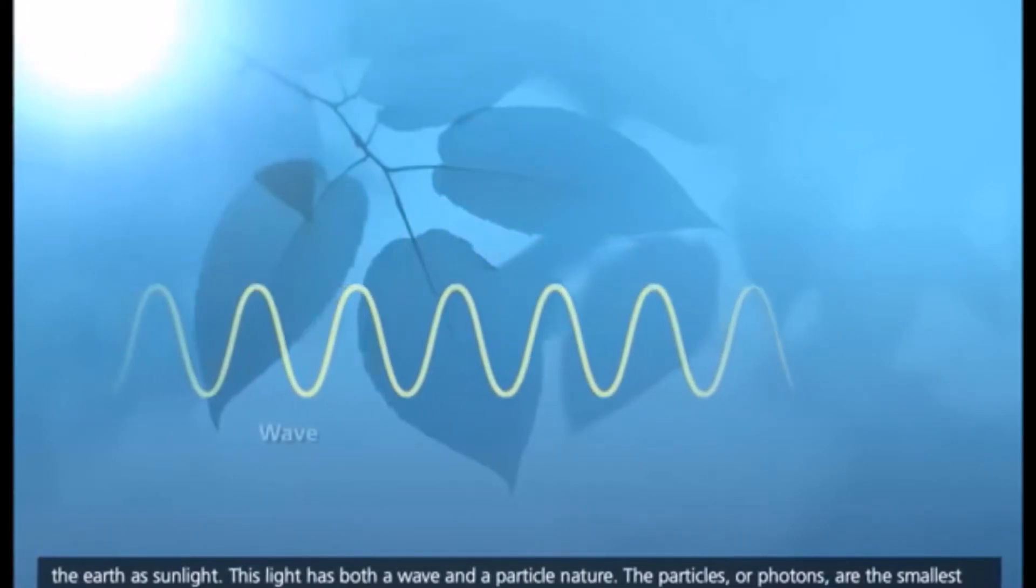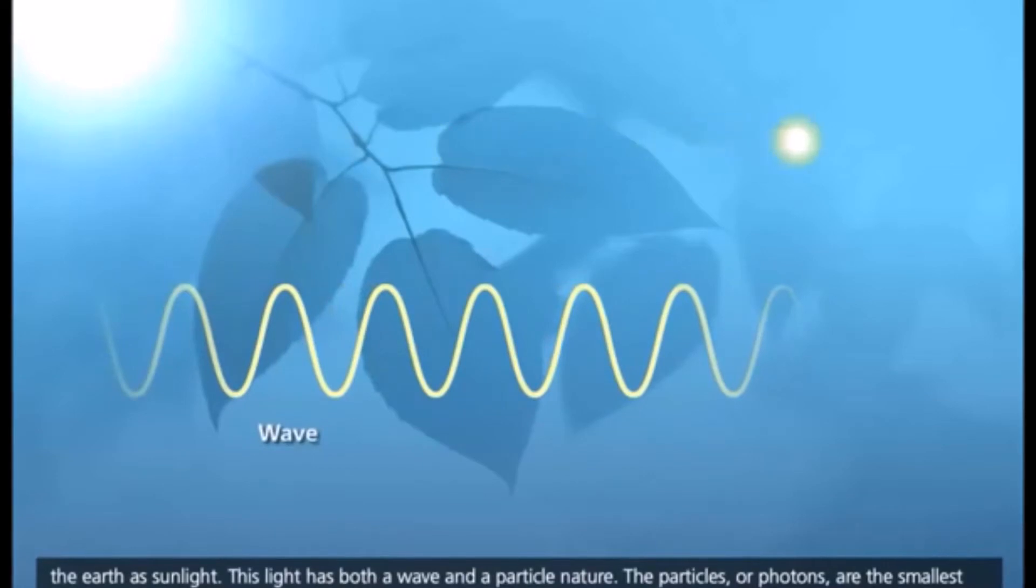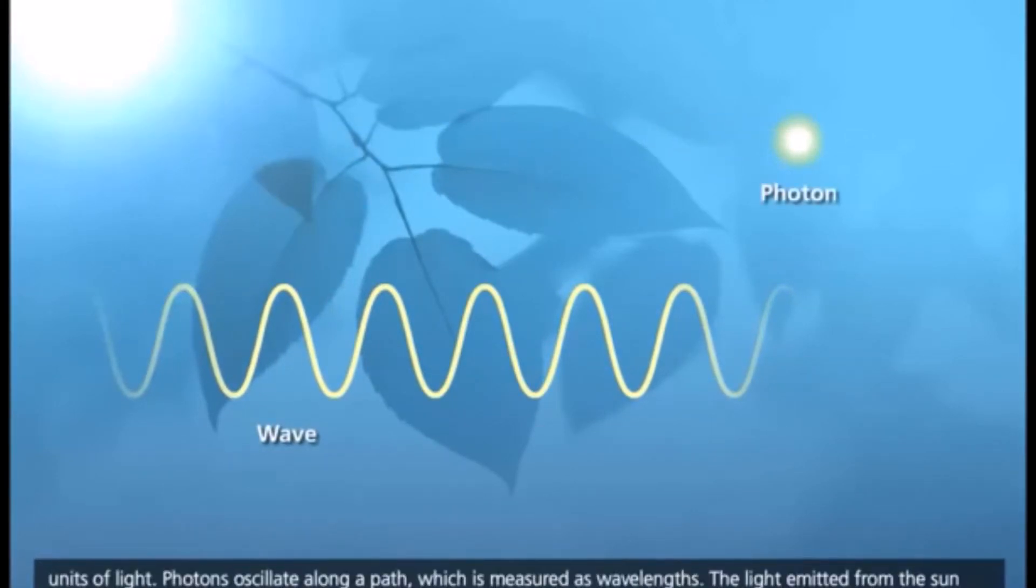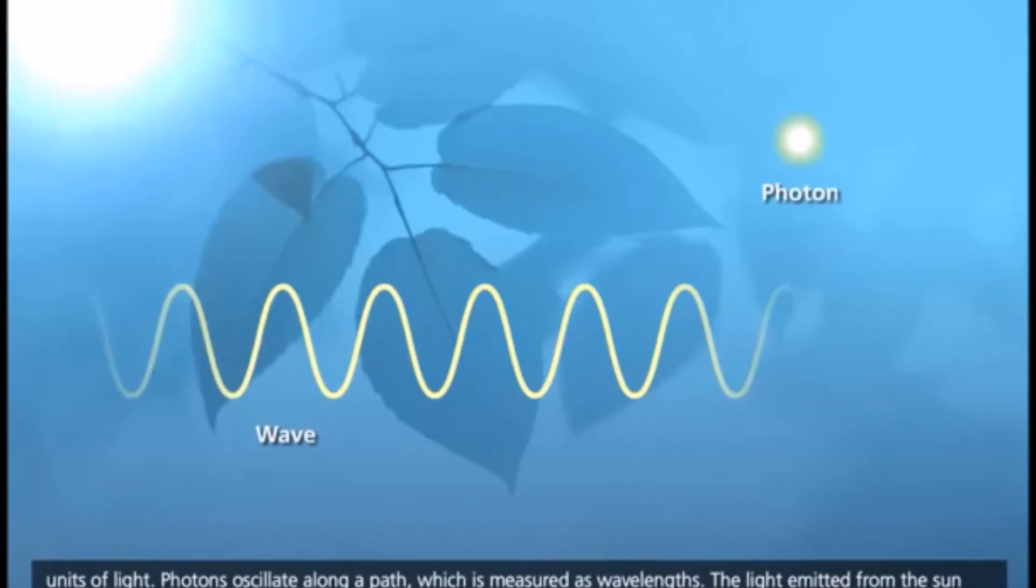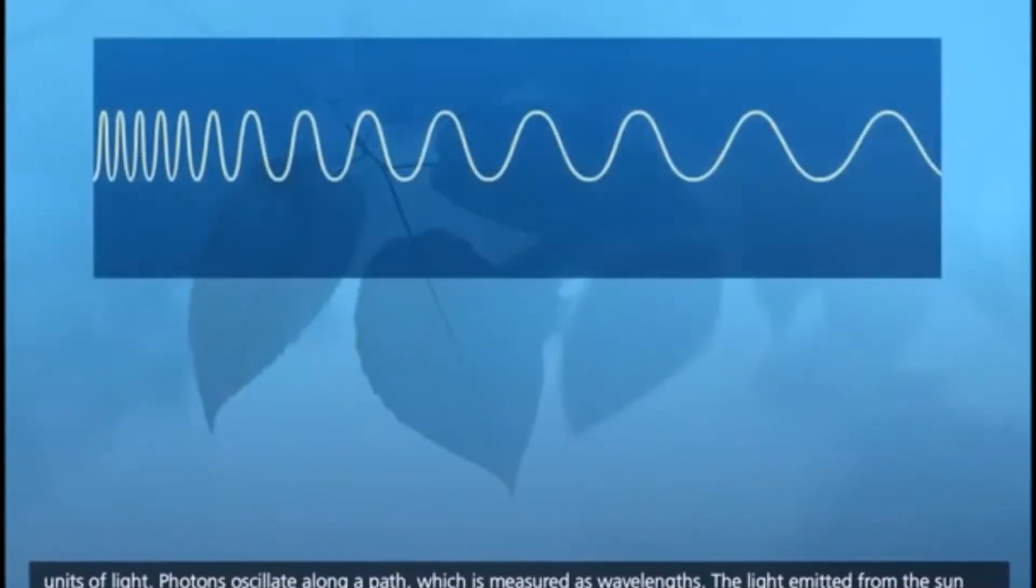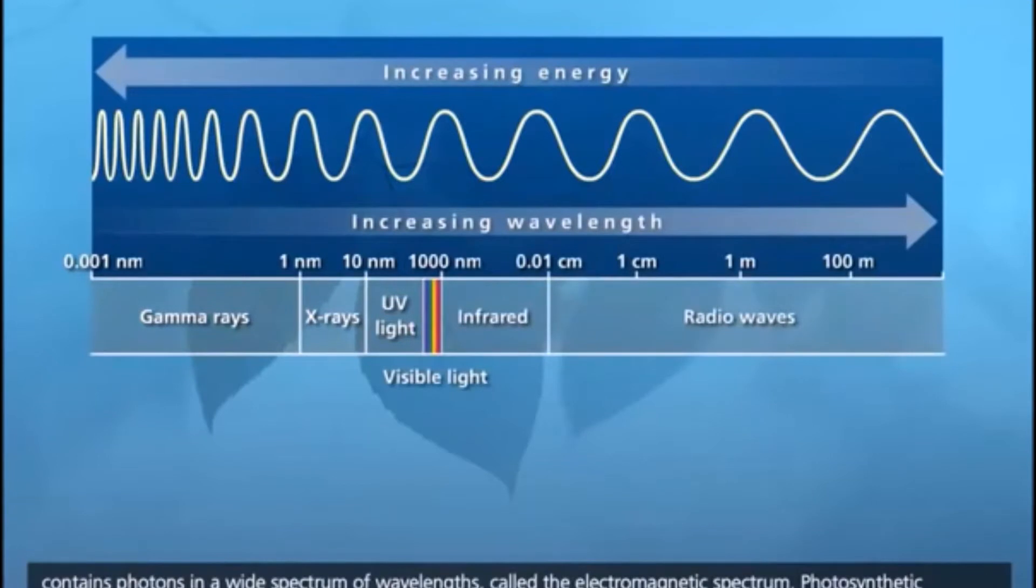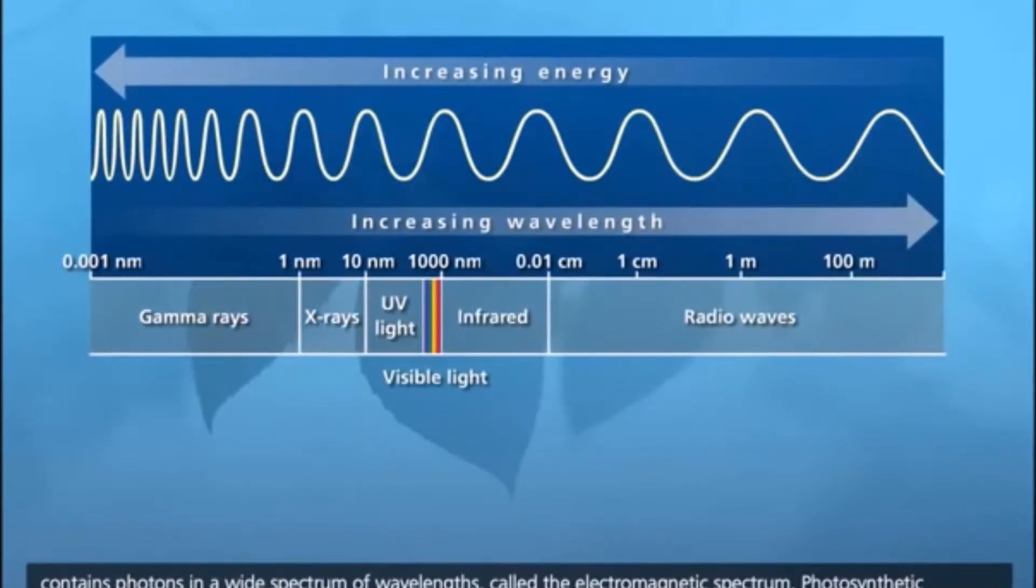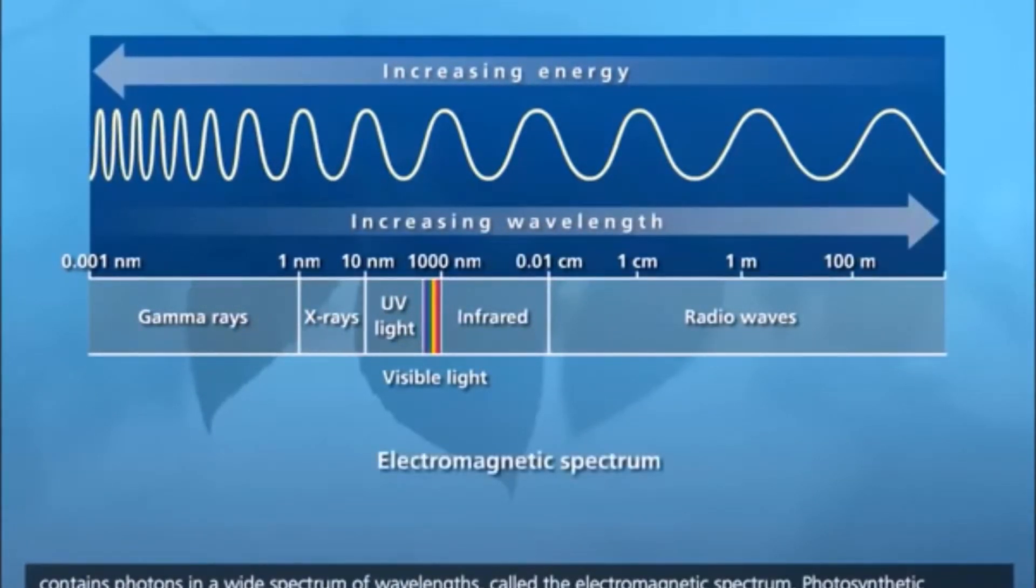This light has both a wave and a particle nature. The particles, or photons, are the smallest units of light. Photons oscillate along a path which is measured as wavelengths. The light emitted from the sun contains photons in a wide spectrum of wavelengths, called the electromagnetic spectrum.